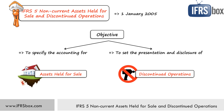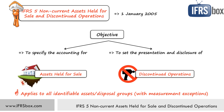IFRS 5 applies to all identifiable assets and disposal groups with some measurement exceptions. Therefore, whether you deal with property, associates, long-term bonds, line of business, or biological assets, you should present them under the standard in the financial statements if they meet the conditions. You should not measure them all under IFRS 5, but we will explain the exceptions a bit later.